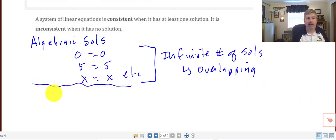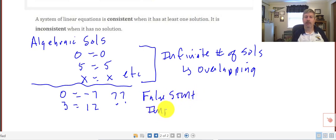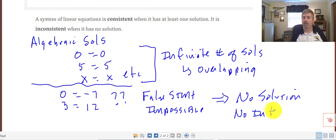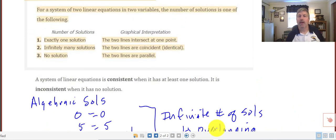Another possibility is you could get something like 0 equals negative 7 or 3 equals 12. Something that doesn't seem to make sense or some sort of false statement or impossibility. As you probably have predicted, those types of answers lead to no solution. There's no particular solution for the system or graphically, there's no intersection, no overlap on the graph of those two lines. So just some other possibilities we could get when solving a system of equations. You'll get some more practice with this when I see you in class. Thank you.